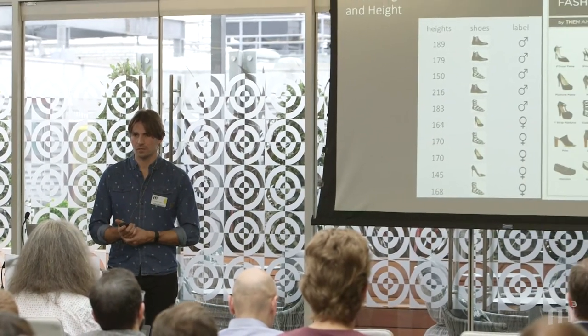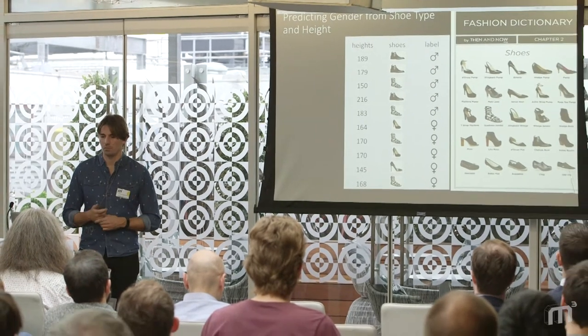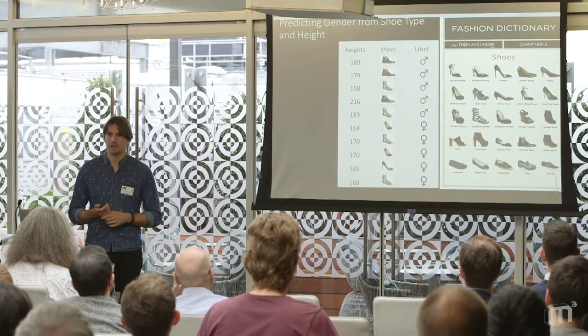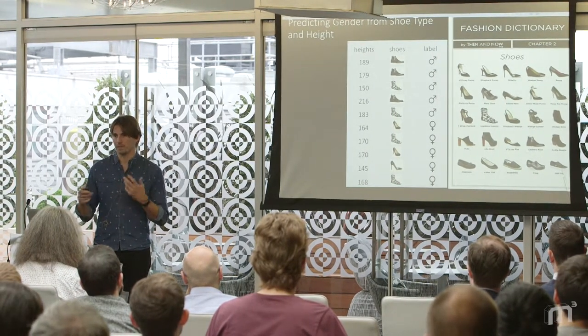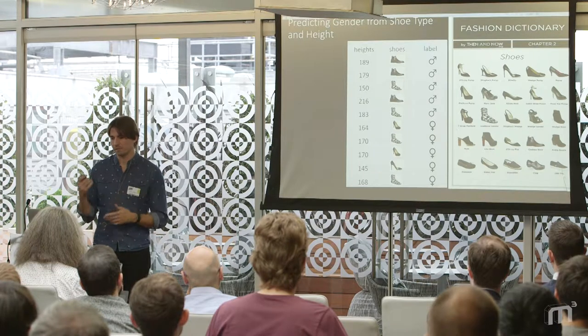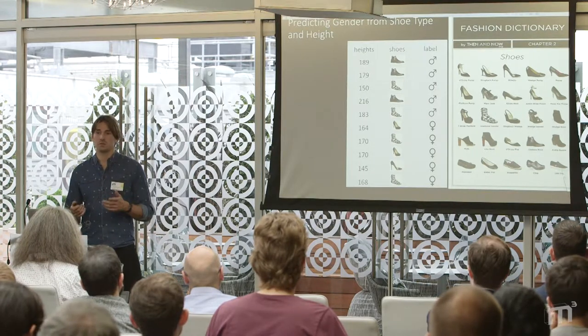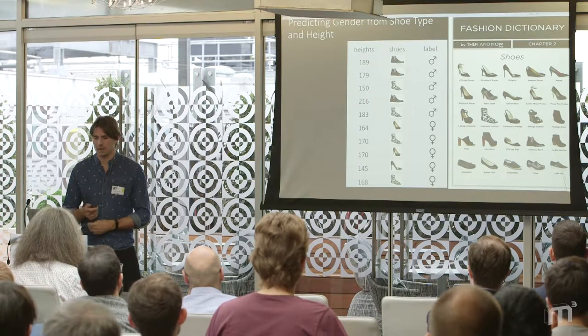So the problem of representation — this is the question of how, given real-world objects, do you get them into your machine learning algorithm? The example I'm using, because I work at ASOS, is a dataset where you have the height of some people, you know which type of shoe they're wearing, and you're trying to predict whether they're a man or a woman. It's easy to represent height because it's just a number. The question is: how do you represent shoes efficiently to predict gender?